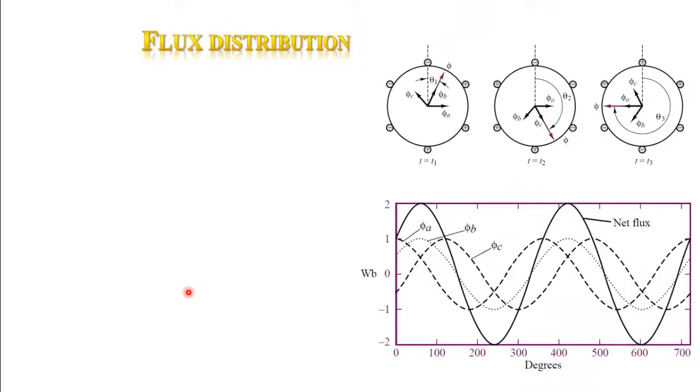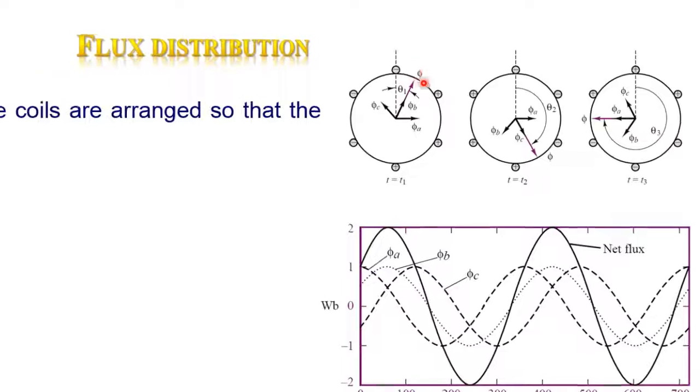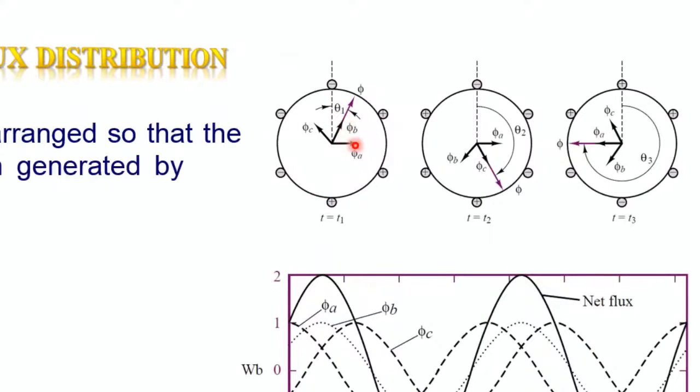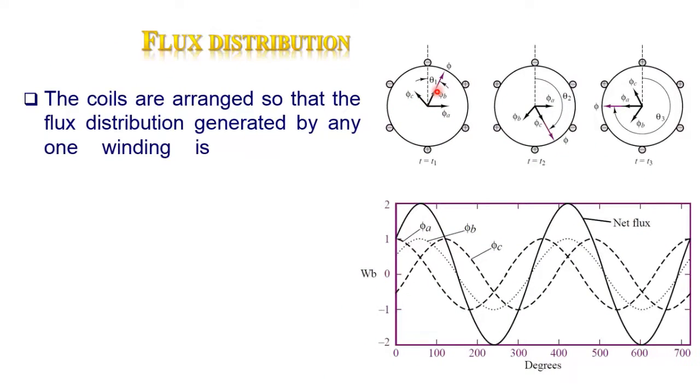After the current in the stator is produced, let's see how flux distribution in the motor looks like. The coils are arranged such that the flux distribution generated by any one winding is approximately sinusoidal.